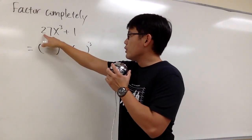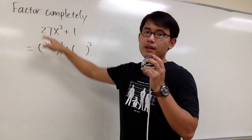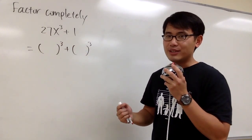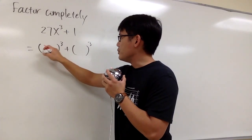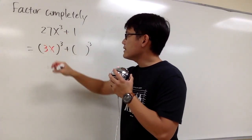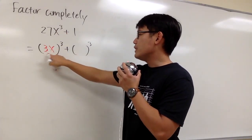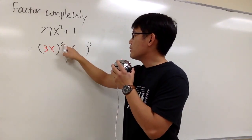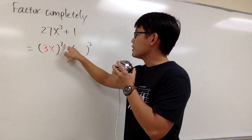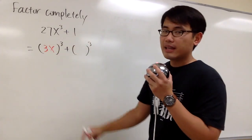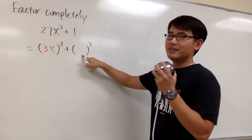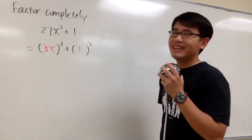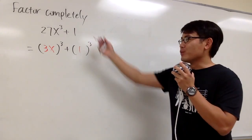To fill in these parentheses, look at this — originally it's 27. We have to ask ourselves, what times what times what will give us 27? The answer is 3. So we have 3, and we attach the x, because if we have 3x in the parentheses raised to the third power, we end up with 3 to the third power being 27, and x to the third power is x to the third power. How about 1? 1 times 1 times 1 is equal to 1.